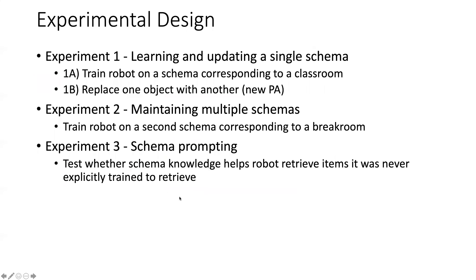Using this robot, she and her student Iraq set up an experimental design mimicking the rat study but in a real, non-laboratory environment. The robot learns a single schema — a classroom — and is trained to learn what objects belong in a classroom. Then you test with new paired associations by replacing one object with another. After that, we want to see if it can maintain multiple schemas by training it in a break room with items you'd find there. The third experiment was to prompt the schema: if the robot was never explicitly trained to retrieve an object, but an object fits within a schema and you present it as a cue, would the robot be able to find that object quickly?